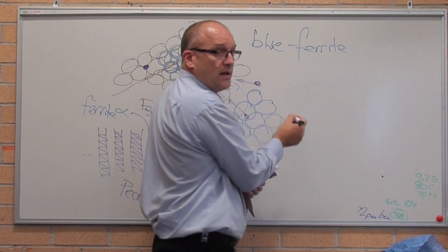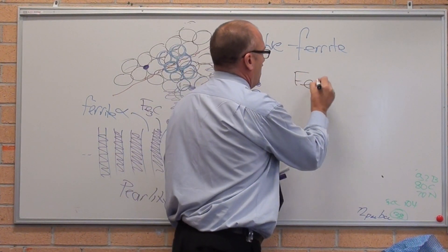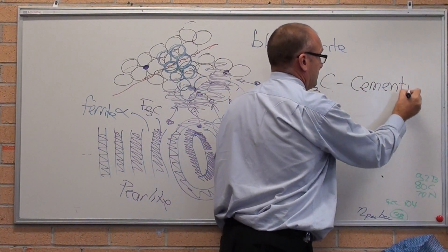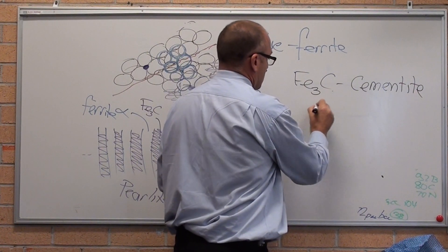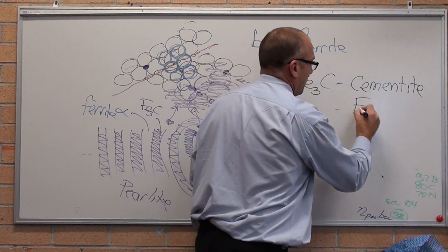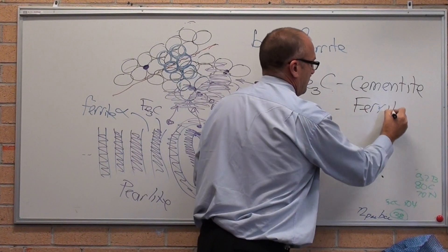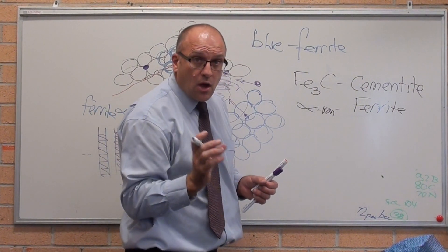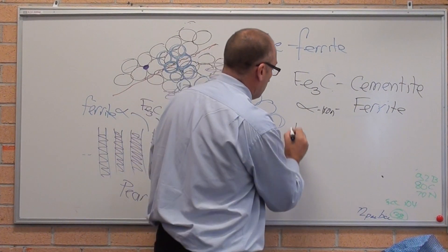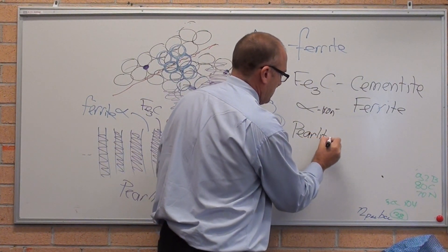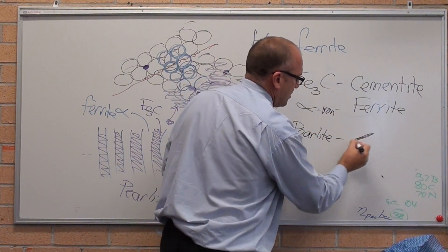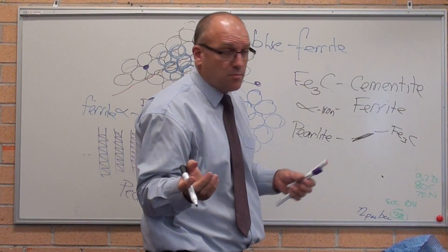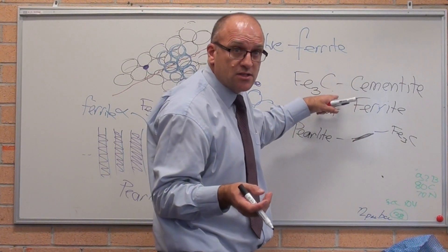The phases in steel that we need to worry about are iron carbide — cementite — and there is alpha iron, which is ferrite. We also talk in low carbon steel microstructures about a phase called pearlite. That is layers of iron carbide, which is a ceramic. Steel is weird because it makes a natural ceramic as it cools inside the structure.